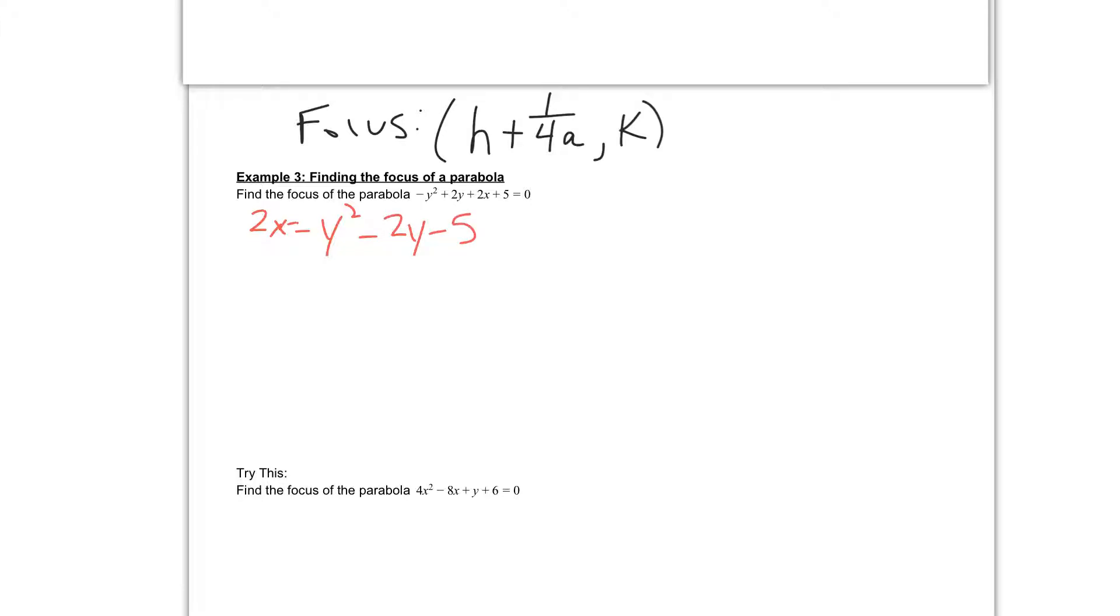And then what I'm going to do is I'm going to go ahead and divide everything by 2. So I get x equal to 1 half y squared minus y minus 5 over 2. And from here, I can go ahead and complete my square.